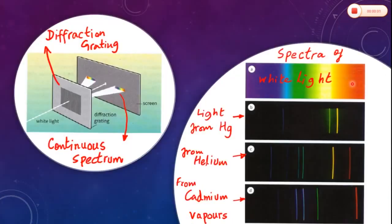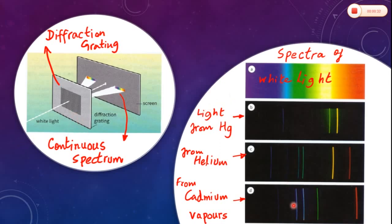A continuous spectrum, like the spectrum of white light, shows that it consists of a range of wavelengths from around 4 × 10⁻⁷ meters for violet to around 7 × 10⁻⁷ meters for red. When white light splits up into a continuous spectrum as it passes through a diffraction grating, each color has a unique wavelength. If the source is narrowed and viewed through a diffraction grating, a line spectrum is seen. These are also known as emission line spectra and show the composition of light emitted by hot gases of the elements.